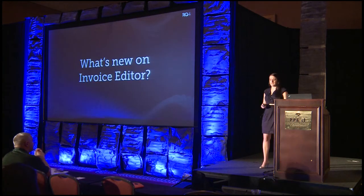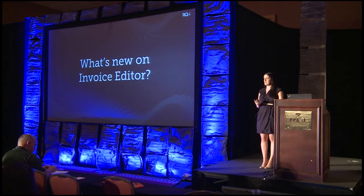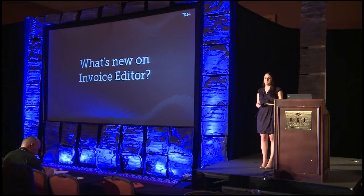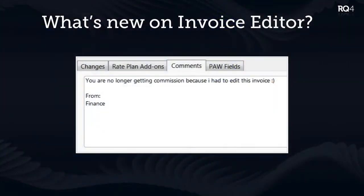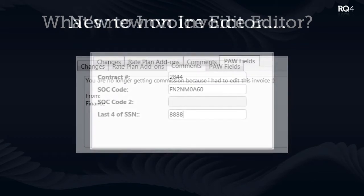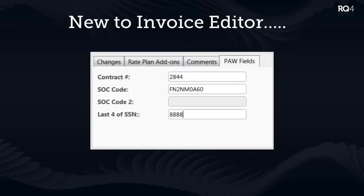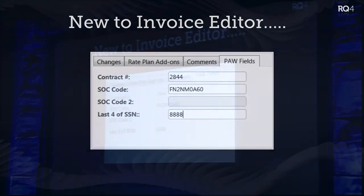Here's what's new in the invoice editor, for the 20% using it and the 80% who will likely start. First, you can see and change comments on the invoice — any new comments you put in will appear on the new sale that's created. Also, all of those extra fields on the phone activation wizard — the SOC code, extra fields, contract number — this now allows you to edit them as you go through the process.